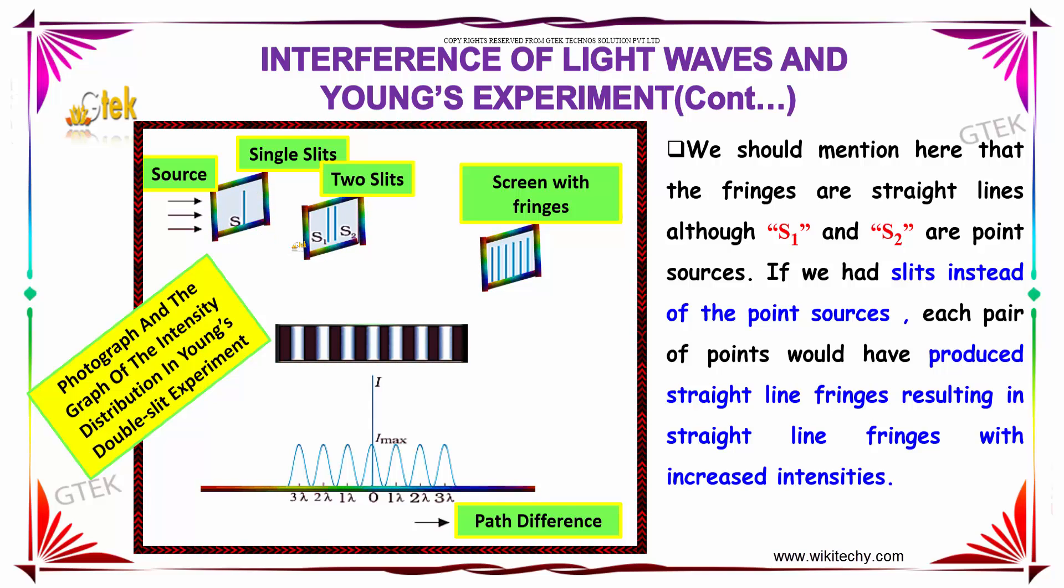We should mention here that the fringes are straight lines, although S1 and S2 are point sources. If we had slits instead of point sources, each pair of points would have produced straight line fringes, resulting in straight line fringes with increased intensities.